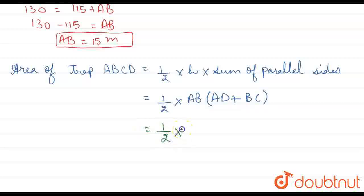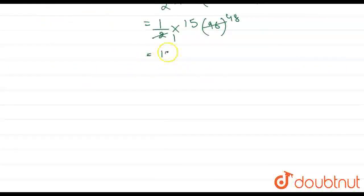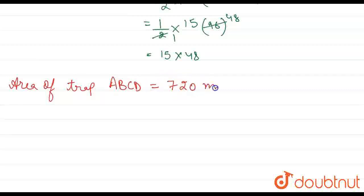Half times 15 times 42 plus 54. Half times 15 times 96. Half of 96 is 48, which equals 15 times 48. Therefore, the area of trapezium ABCD equals 720 square meters.